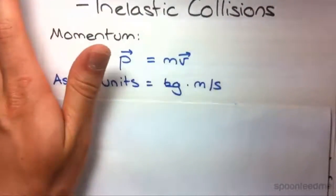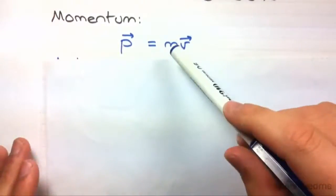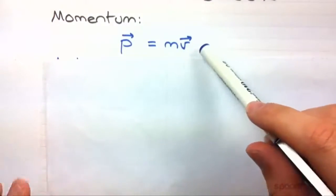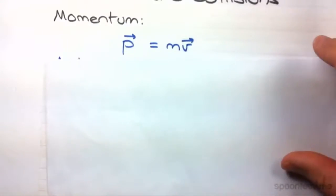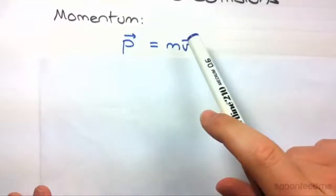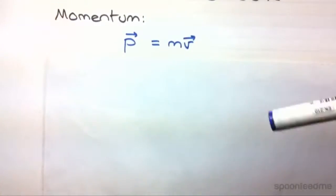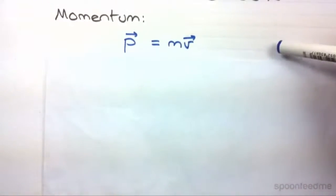Momentum is defined as the product of the mass and velocity of a body. This symbol p is for momentum and it's a vector because velocity is a vector, so it's got direction. Basically what it is is a measure of how easy it is to stop something, but we're not going to look at that property right now. We're going to prove that later on.